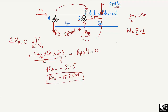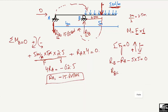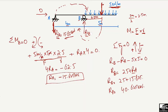Now to find RB, we take the summation of vertical forces equal to zero. Upward forces are positive and downward forces are negative. The only upward force is RB. The downward forces are RA (acting downward) minus RA, and also the UDL: minus 5 multiplied by 5, equal to zero. Solving, RB equals 25 plus RA, which is 25 plus 15.625, so RB comes out to be 40.625 kilonewton.